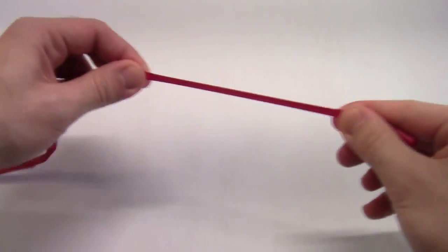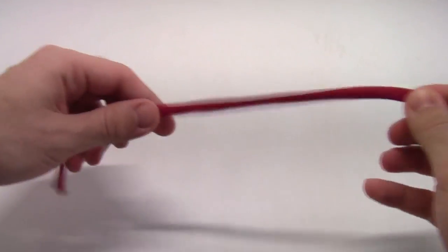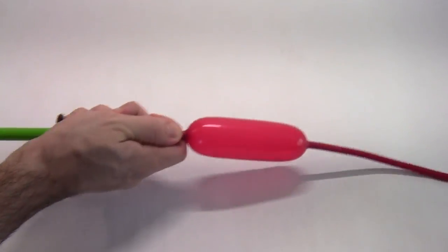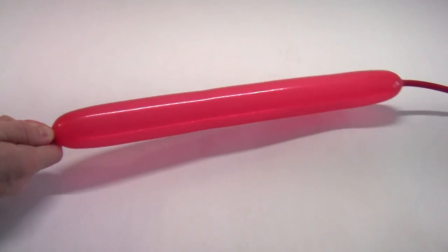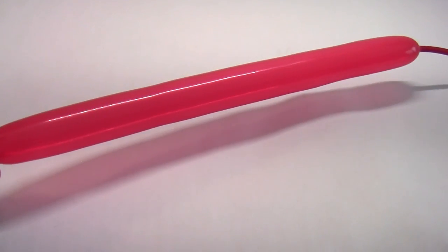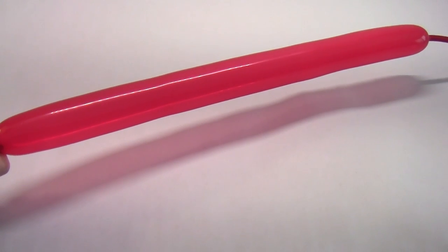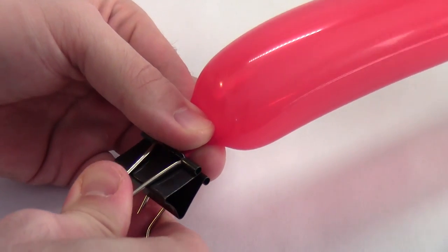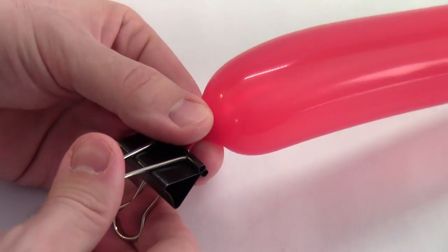Next, pre-stretch one of the balloons to make it easier to inflate. Use the balloon pump to inflate the balloon about half to three-quarters of the way. Don't inflate it so much that it starts to curve. It's important to keep the balloon straight. Use a large binder clip to pinch the nozzle of the balloon shut and this will prevent it from deflating as you set up the rest of your rocket.